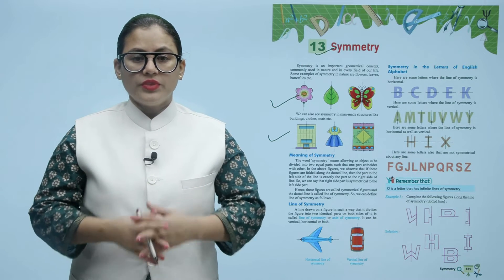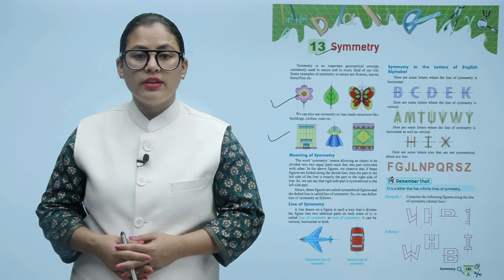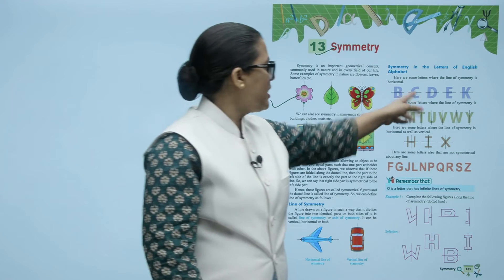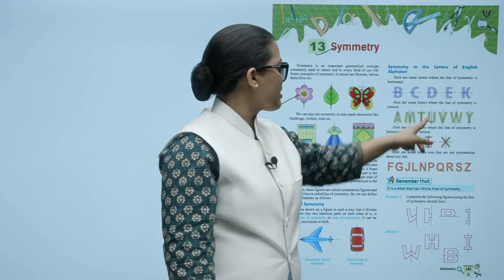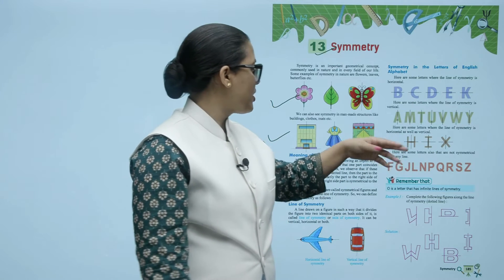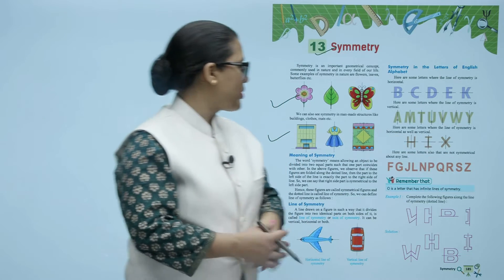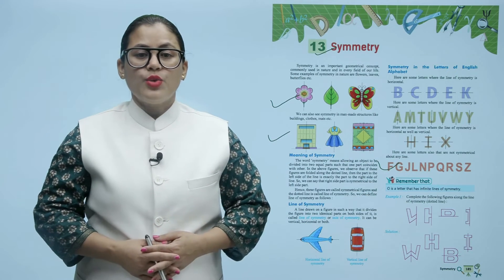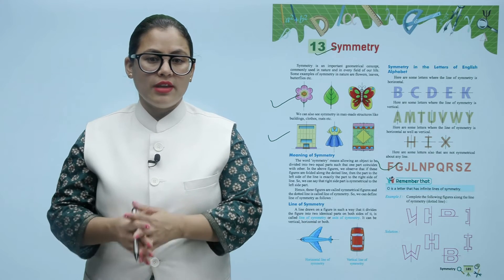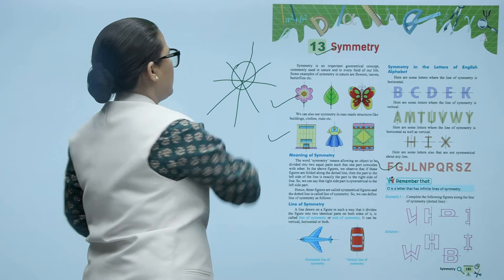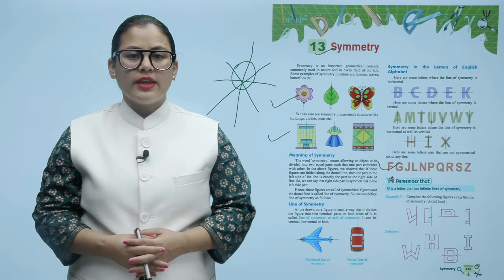Now let's look at symmetry in the letters of the English alphabet. Here are some letters where the line of symmetry is horizontal, like B, C, D. In these letters the line of symmetry is vertical, like A, M, T, U, V, W. Some letters are symmetrical on both sides. And some letters like F, G, J, L are not symmetrical at all. Remember that O is a letter that has infinite lines of symmetry — you can draw lines through it in any direction.